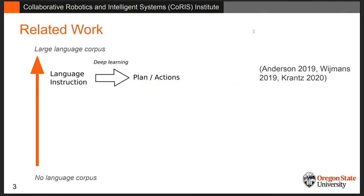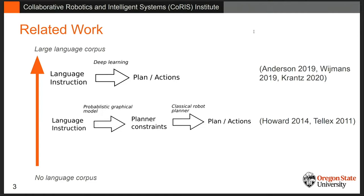Looking at related work, I break this down by how much language corpus is required. Embodied AI approaches take language instructions plus perception data, run deep learning, and output a plan, but require a lot of language corpus data and a simulator. The next set of work breaks instructions down into plan constraints using a probabilistic graphical model, but still requires a decent amount of language corpus. Our proposed method requires no language corpus to train, because we use dependency information from pre-trained models directly.